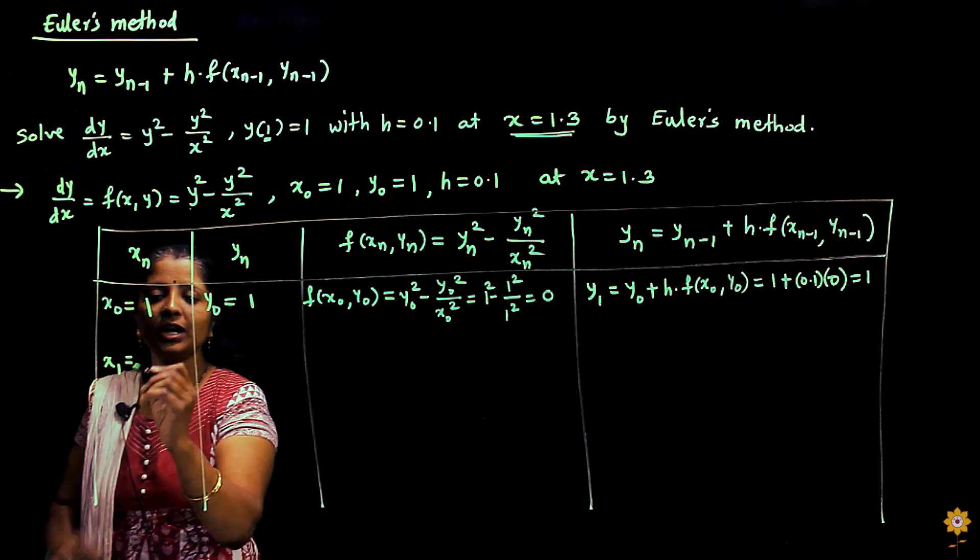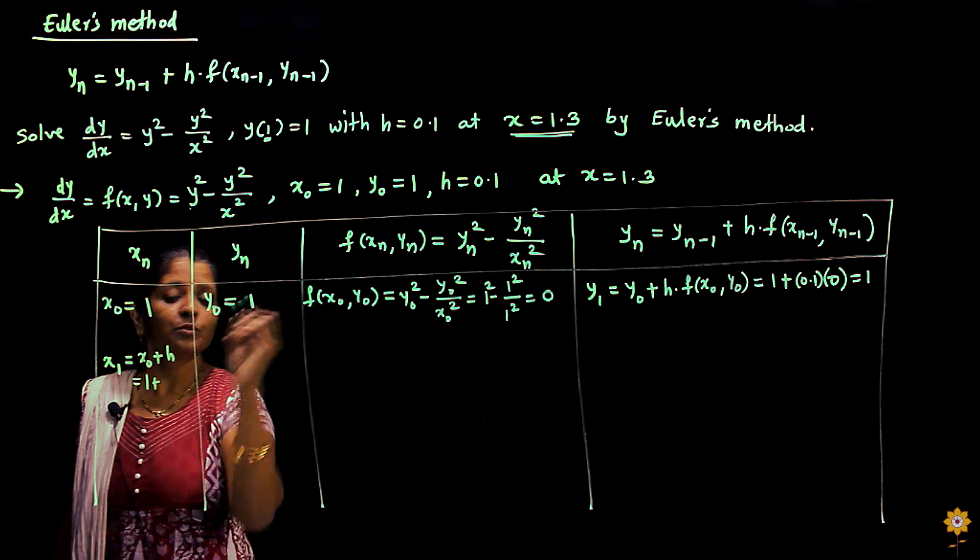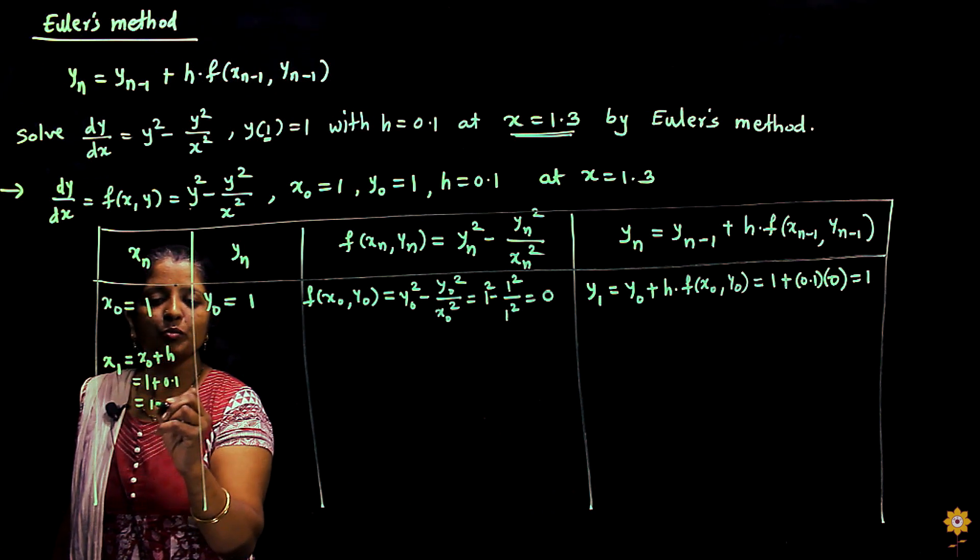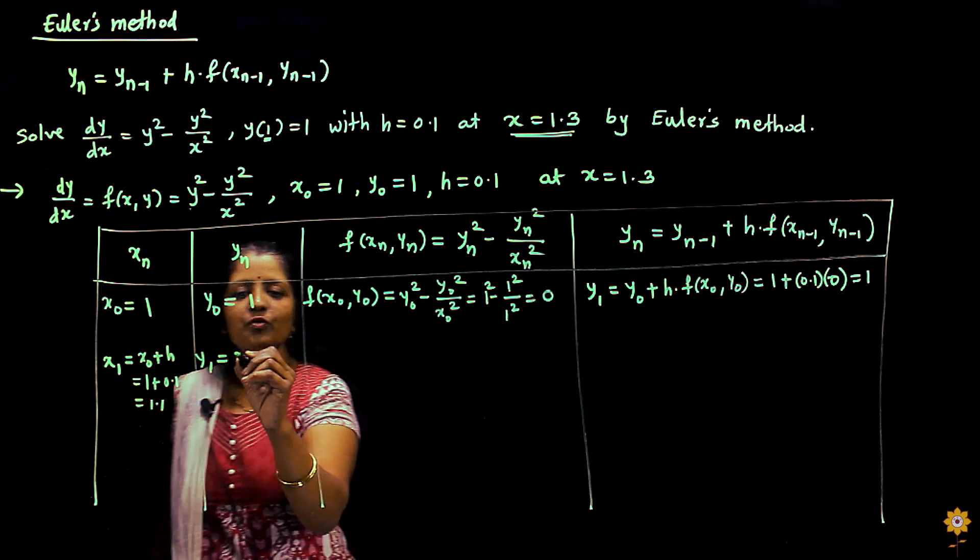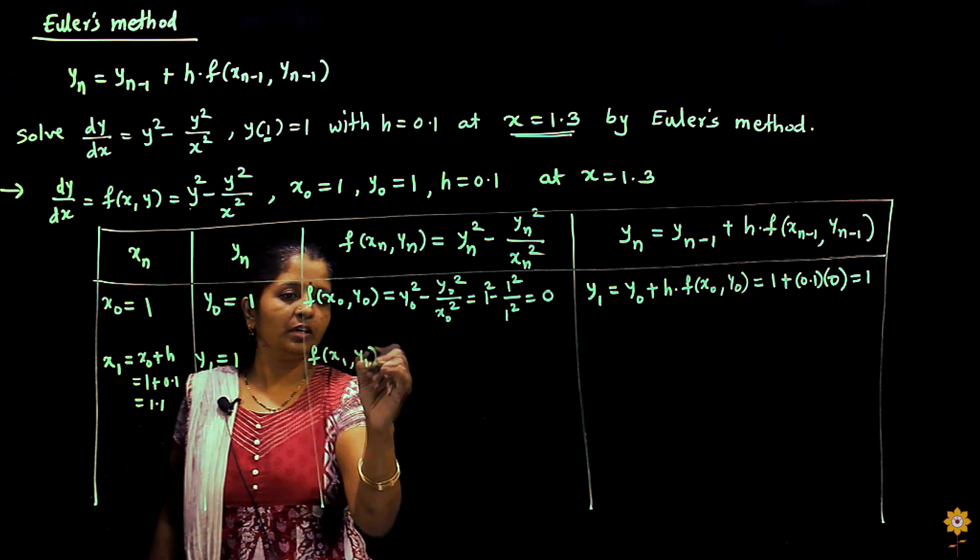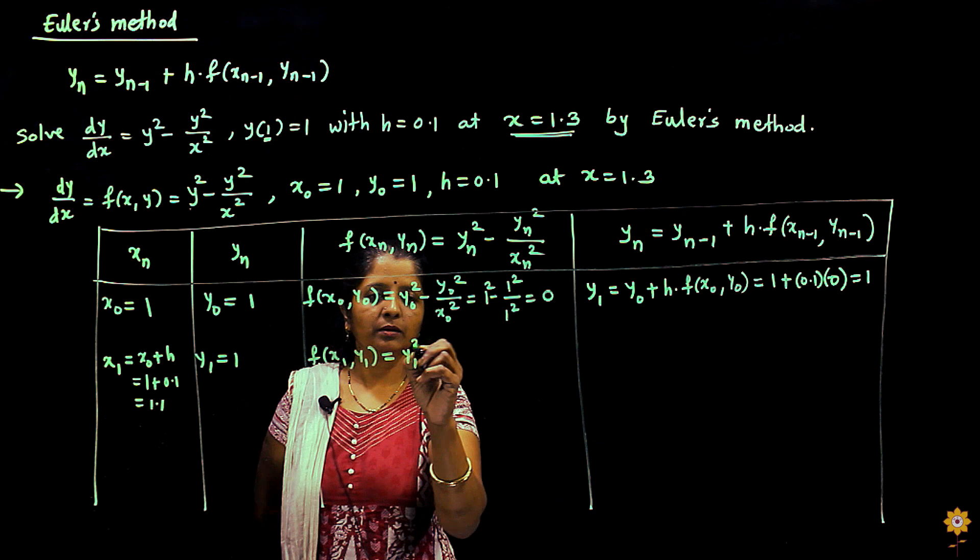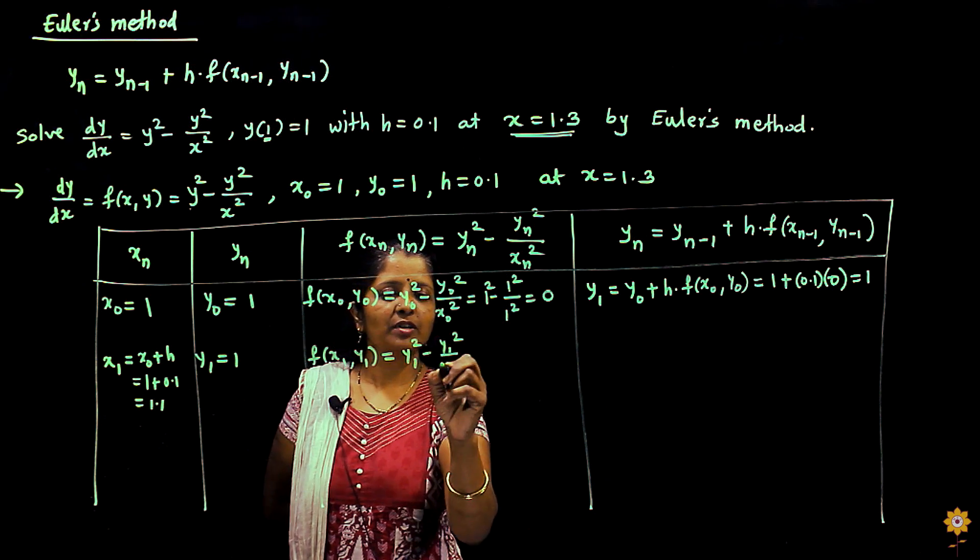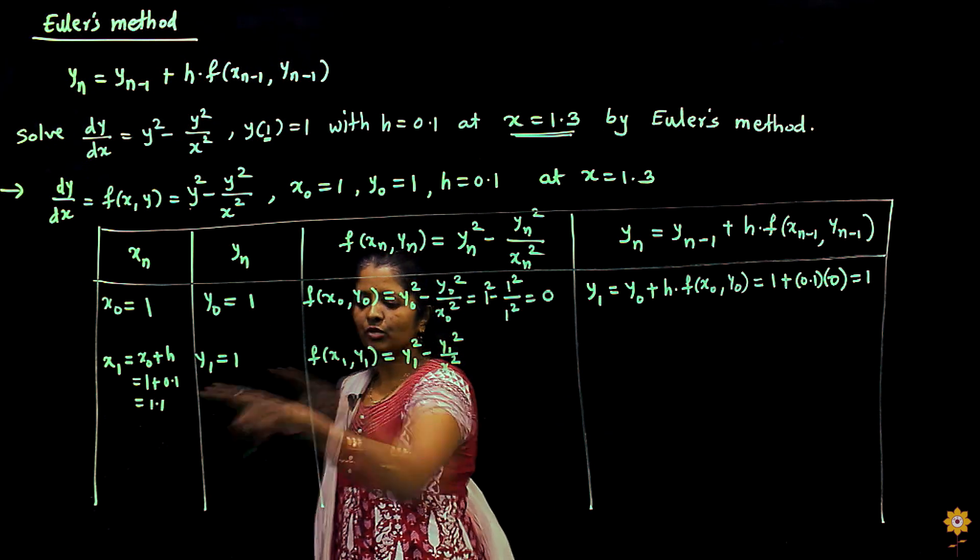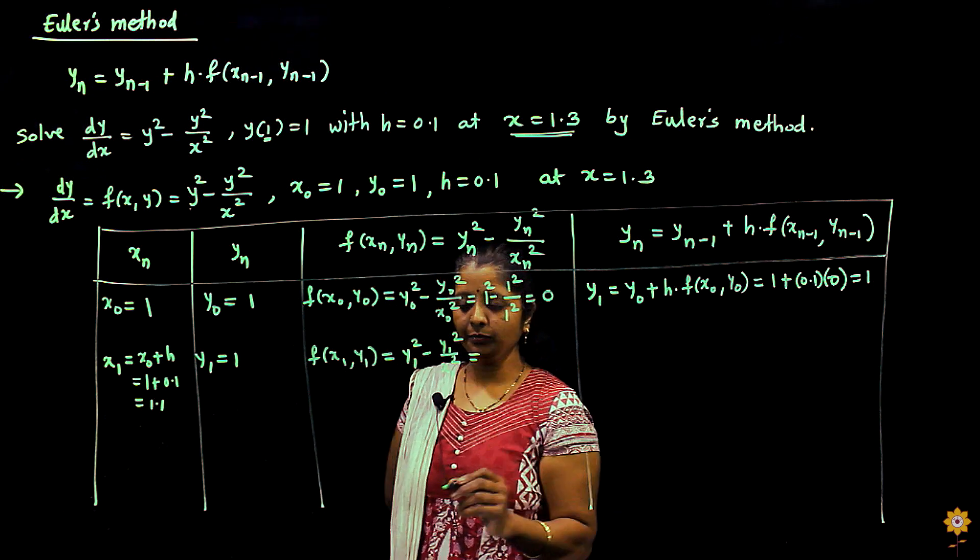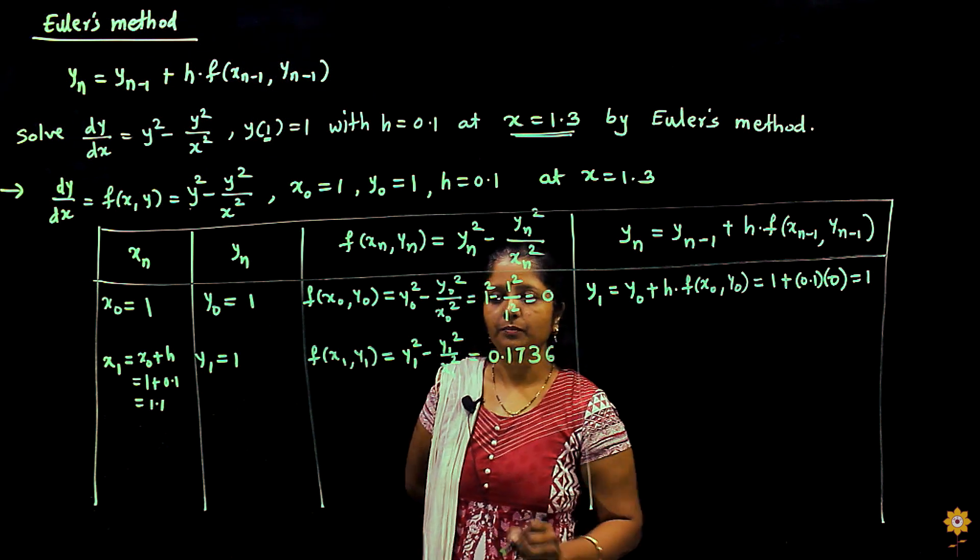x1, as we know, is x0 + h. So it is 1 + 0.1, that is 1.1. y1 we have got the value as 1. f(x1, y1) is equal to y1² minus y1²/x1². Substitute the values of y1 and x1 over here; calculate it, you will get the answer as 0.1736.